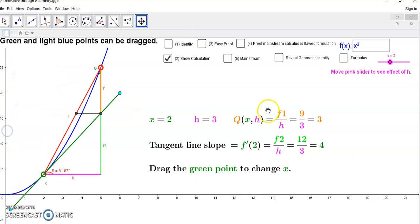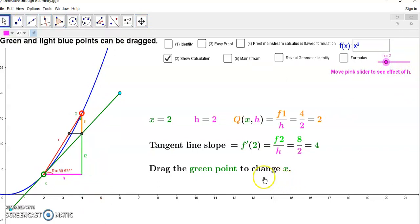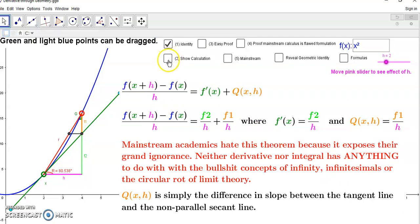If x is at 2 and h is say 2, just so that we don't have to be all over the show, then you'll see that the derivative is 4, and the same identity here will be used in the definition of the definite integral.